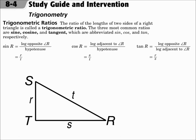The ratio of the lengths of two sides of a right triangle is called a trigonometric ratio. The three most common ratios are sine, cosine, and tangent, which have given abbreviations. Each of these has a formula: sine of the angle equals the opposite leg over the hypotenuse; cosine of the angle equals the adjacent leg over the hypotenuse; and tangent of the angle equals the opposite leg over the adjacent leg.